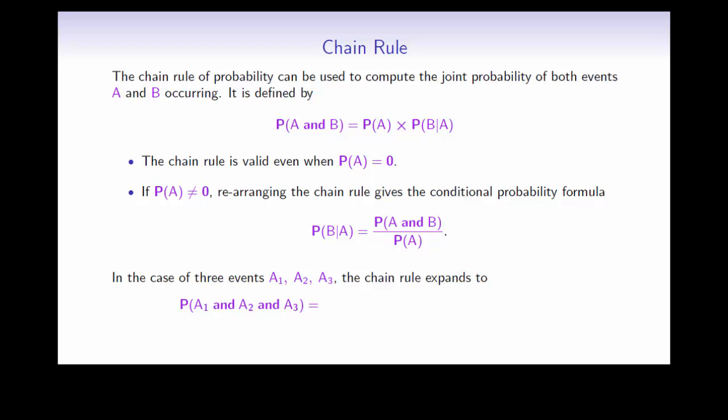The chain rule can also be used for 3 or even more events. In that case, you would take the probability of the first event, multiply by the probability of the second event given that the first one already occurred, and so on, multiplying each time.